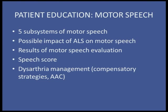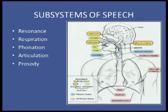The five subsystems of speech: first is resonance — where your voice quality resonates; certain sounds should resonate in the nose, others in the oral cavity. Next is respiration — being able to get adequate breath support for speech, not just for phonation but for conversation. Then phonation — that's your voice, your vocal quality, loudness, your ability to change pitch.